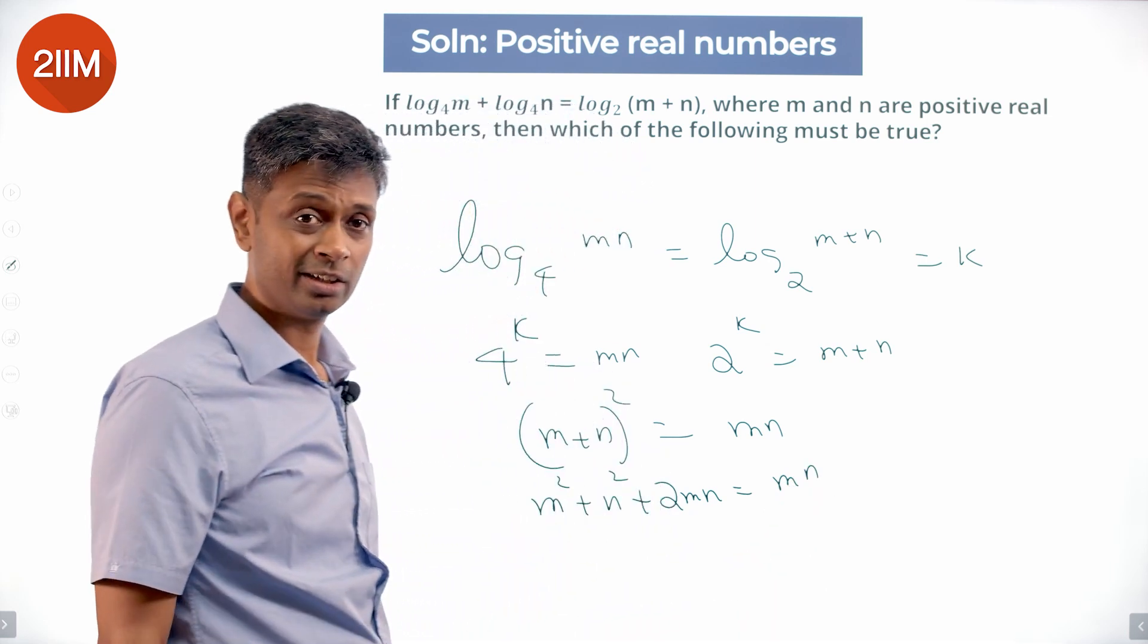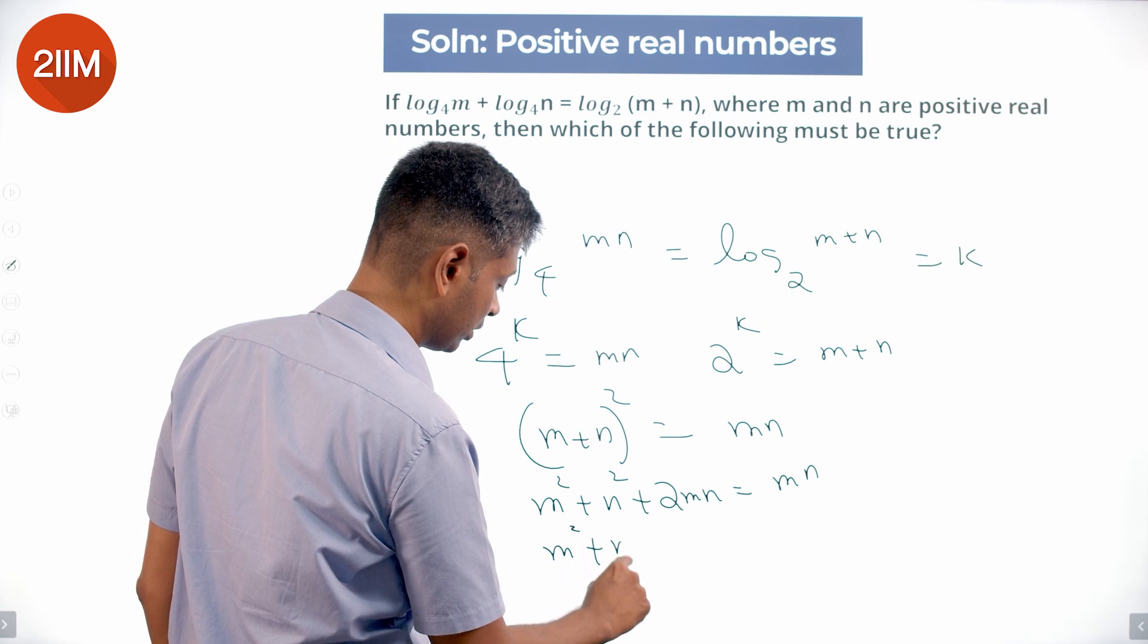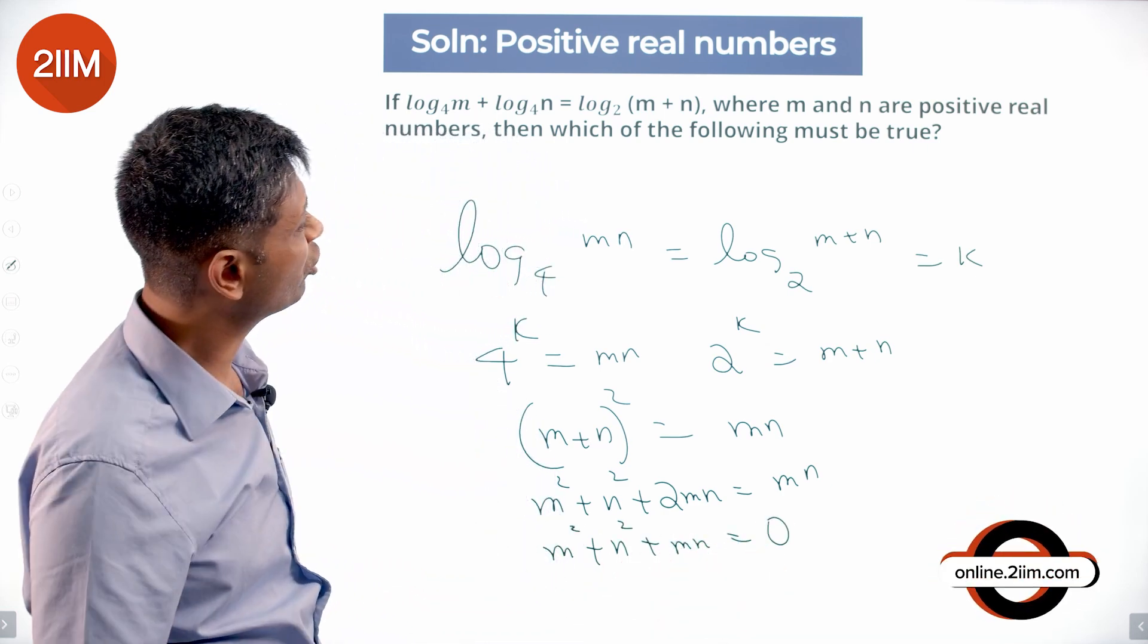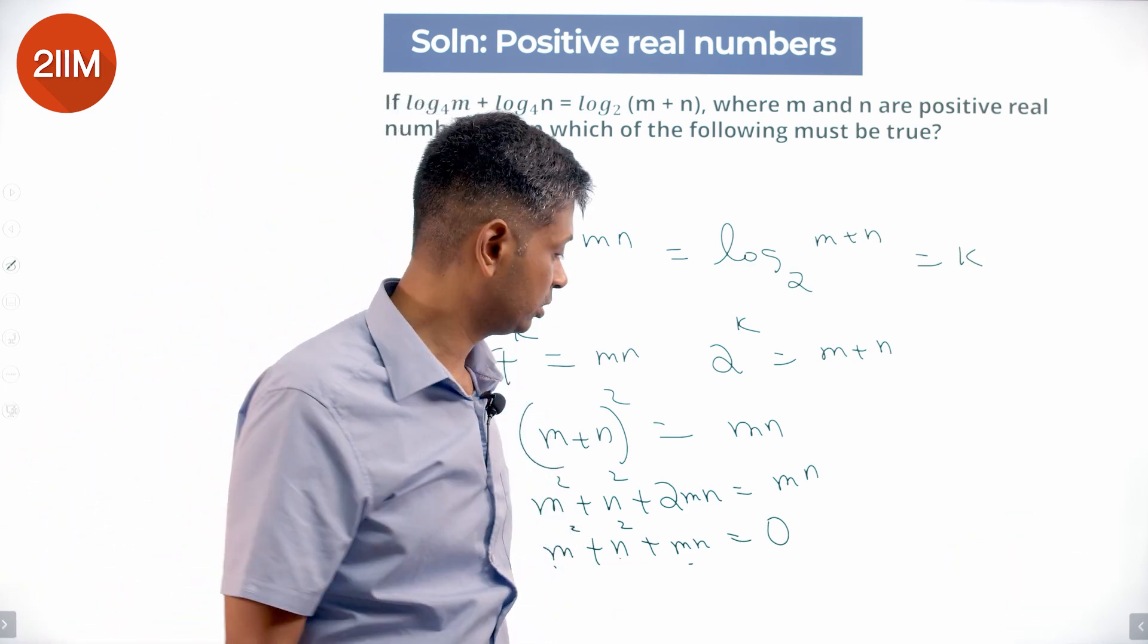This is weird because this means m square plus n square plus mn equals 0. For positive real numbers, m square will be positive, n square will be positive, mn will be positive. This cannot equal 0.